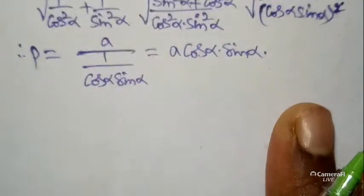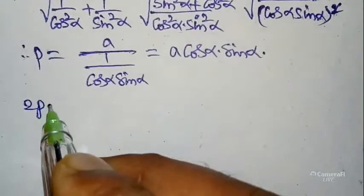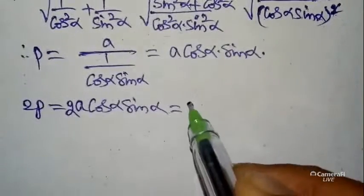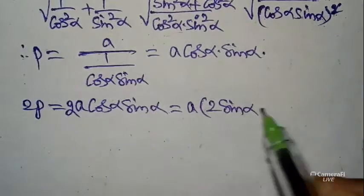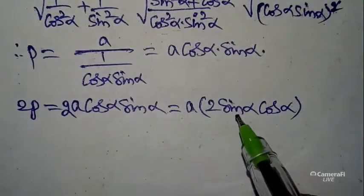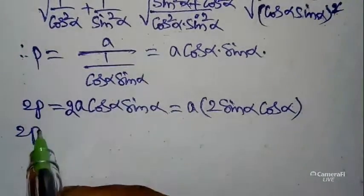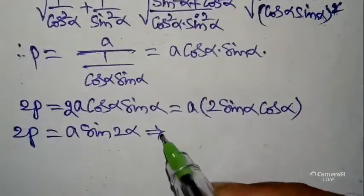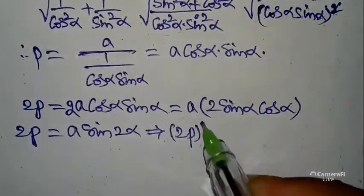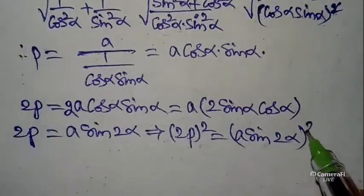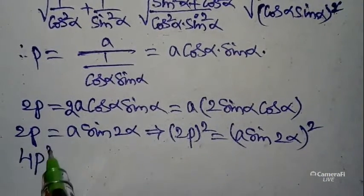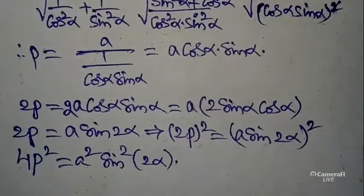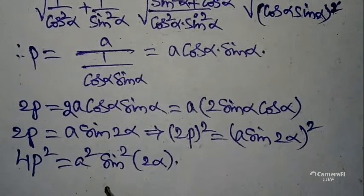According to our question we need 4P². So multiplying both sides by 2: 2P = 2a·cos α·sin α = a·sin 2α. Squaring both sides, (2P)² = (a·sin 2α)², so 4P² = a²·sin²2α. That completes the first part.